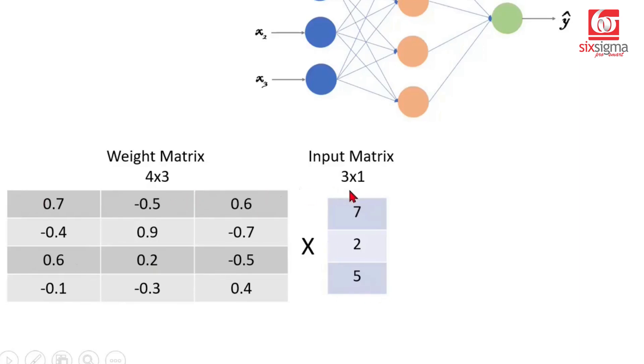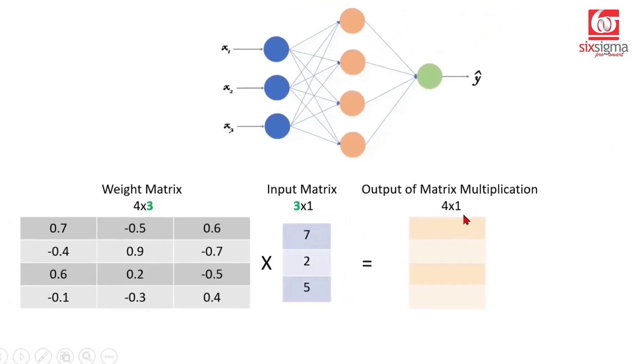If we look at the inputs that we had, those were 3x1. Is this matrix multiplication feasible? The answer is yes, it is feasible because the number of columns in the first matrix are the same as the number of rows in the second matrix. You must be knowing in order for matrix multiplication to be feasible, this is how it is checked and the output of this matrix multiplication is going to be 4x1. At times we call these as inner dimensions. We say that if the inner dimensions are compatible, then the matrix multiplication is feasible and the output will be as per the outer dimensions.